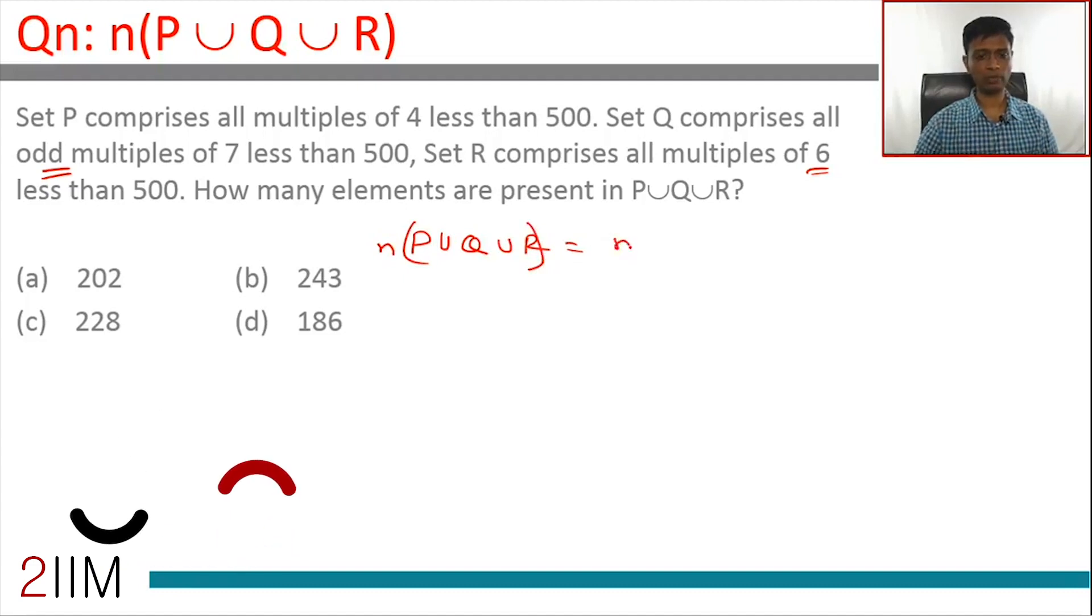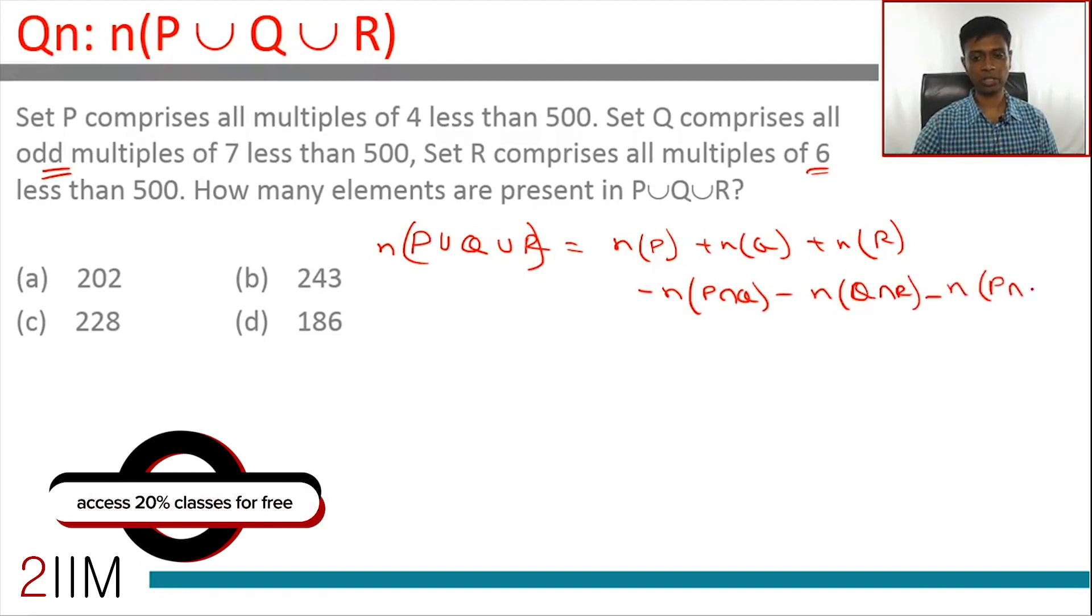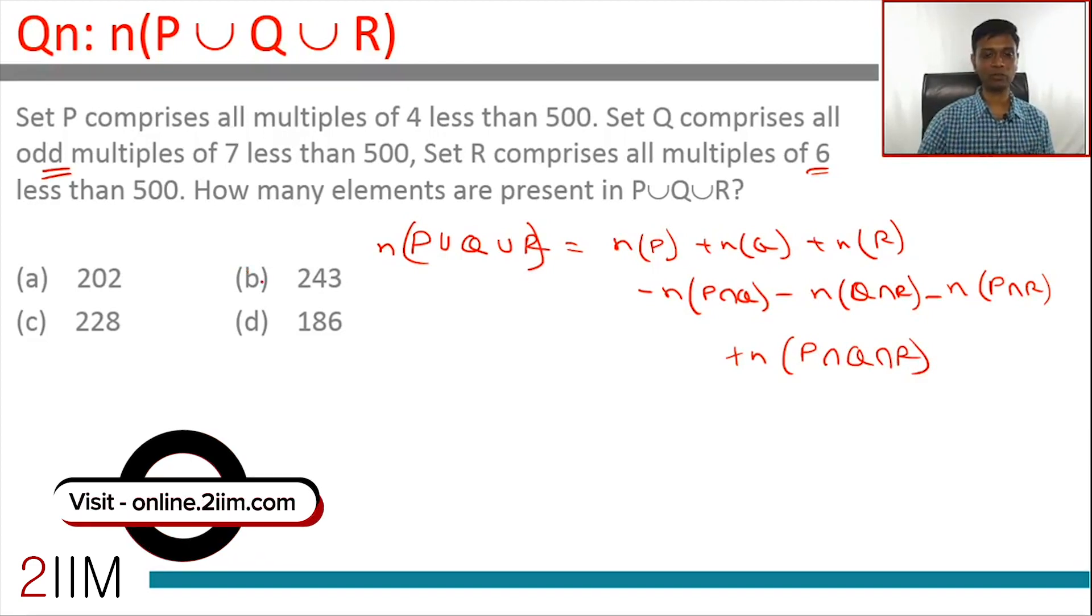We know this formula: n(P ∪ Q ∪ R) = n(P) + n(Q) + n(R) - n(P∩Q) - n(Q∩R) - n(P∩R) + n(P∩Q∩R). We know the elaborate formula, and if we plug into that formula we can find this answer.